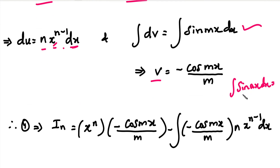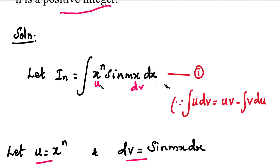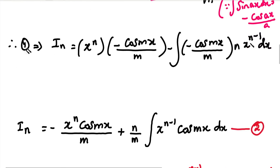This uses the integration formula: integral of sin ax dx equals minus cos ax divided by a, where a is the constant. Substituting into equation number one using the integration by parts formula, we get: integral of u dv equals uv minus integral of v du.